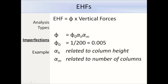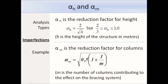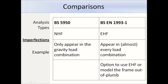Alpha_h is the reduction factor for height, calculated using the height H of the structure in meters. Alpha_m is the reduction factor for the number of columns, where m is the number of columns contributing to the effect on the bracing system. In BS 5950 we would have used notional horizontal forces and they would only appear in the gravity load combination. In Eurocode 3 we have equivalent horizontal forces and the difference is that they appear in almost every load combination — they are additive to the wind loads.